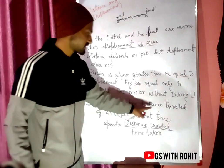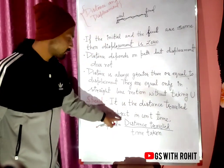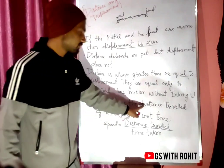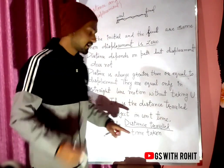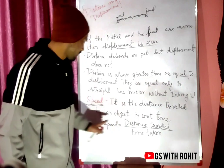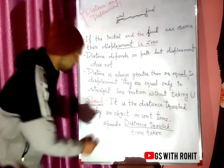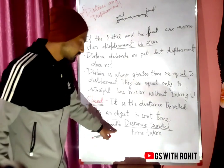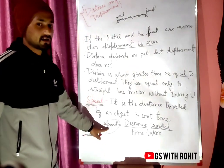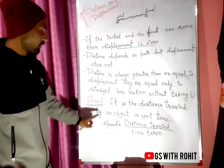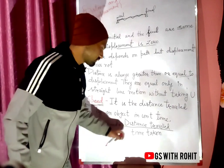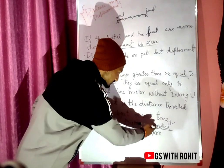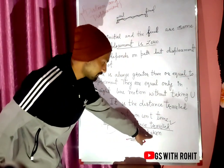Speed is the distance traveled by an object in unit time. If any object travels a distance in unit time, we call that speed.